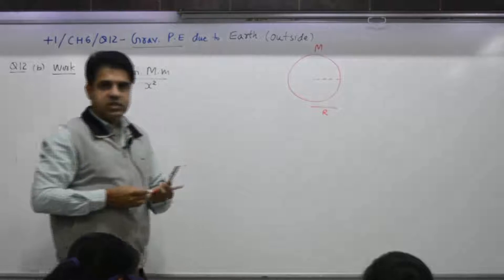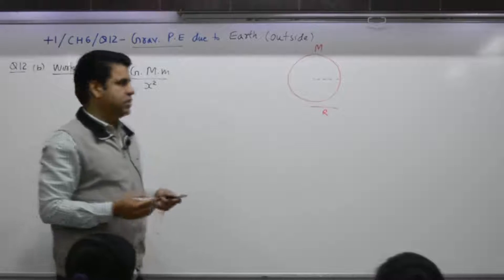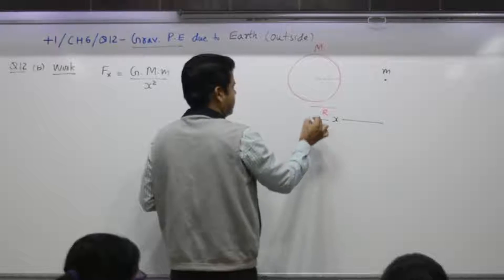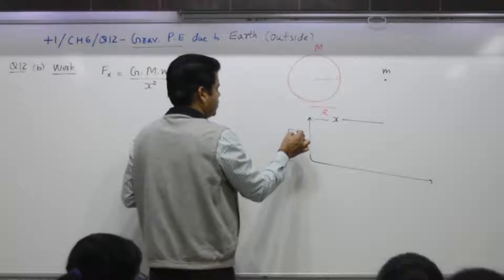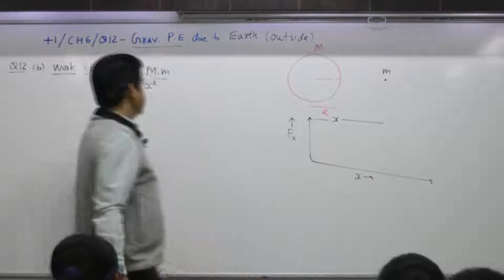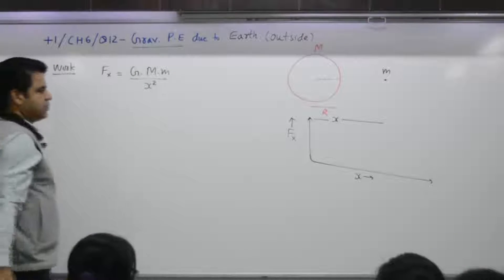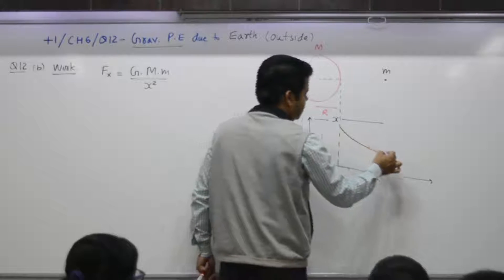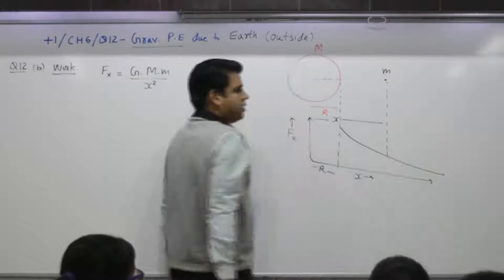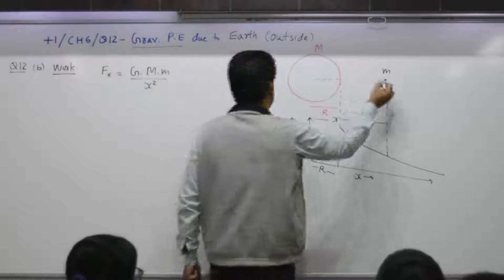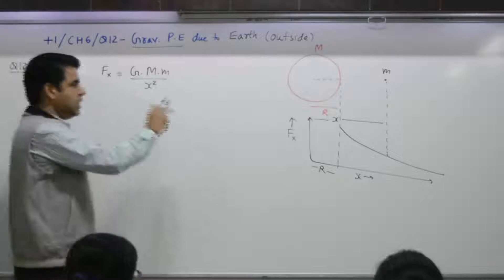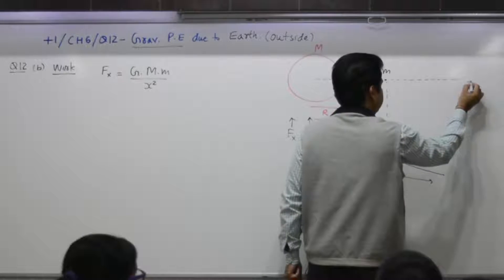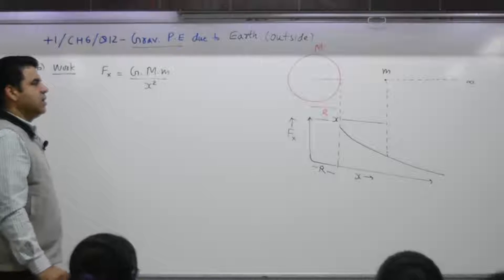Earth is a spherical object with mass M and radius R. You have to find the gravitational potential energy for another mass small m at distance x. Same procedure: first, how force varies with x outside the sphere — F(x) is equal to GMm over x squared, inversely proportional to x squared only outside.